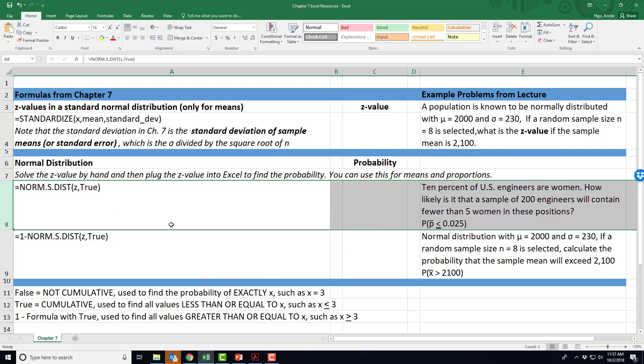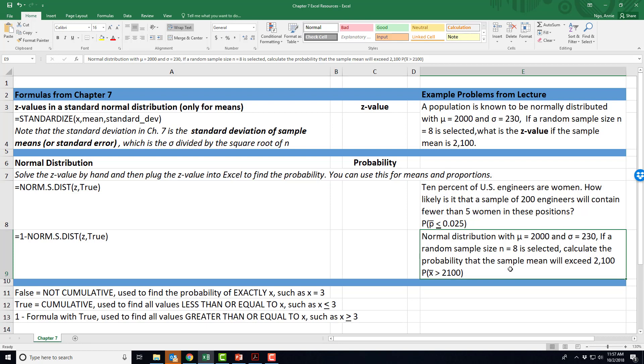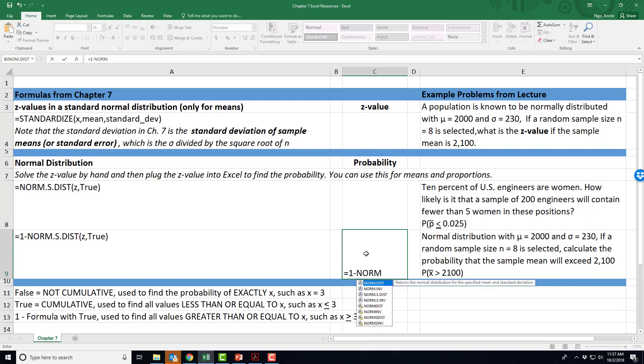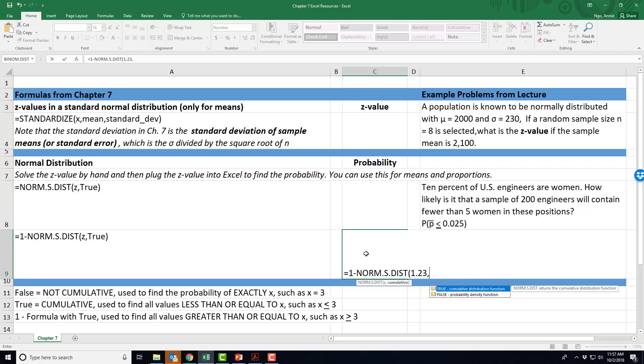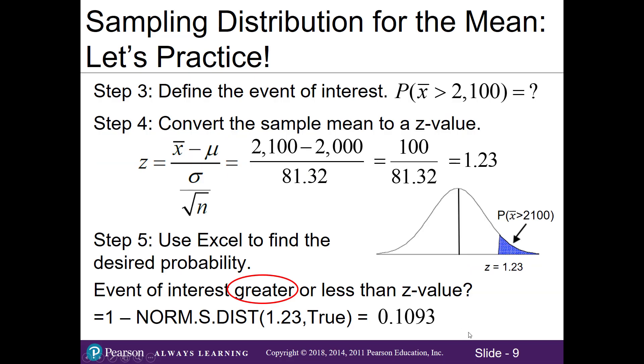This is the example we were just working on. I'll type equals 1 minus norm.s.dist parentheses. The z value we found was 1.23. I'll type in comma and then true and then close out. So the probability is 0.1093. What that means is the probability that our sample mean is greater than 2100 is 0.1093, or 10.93% chance.